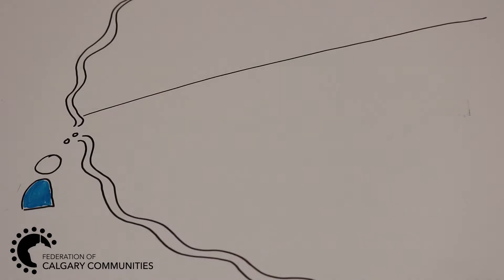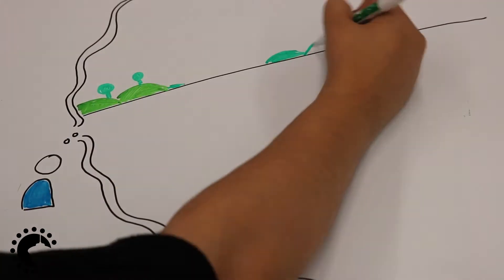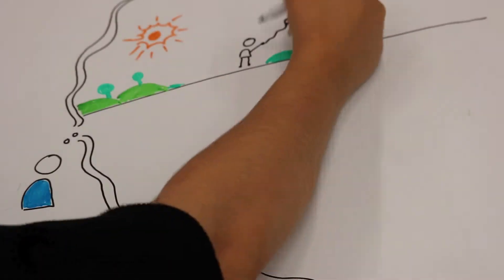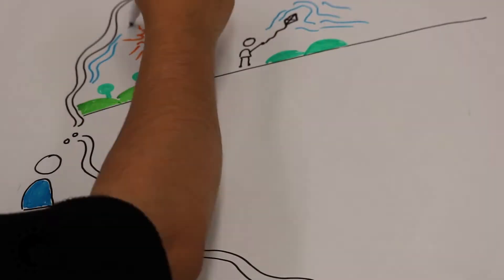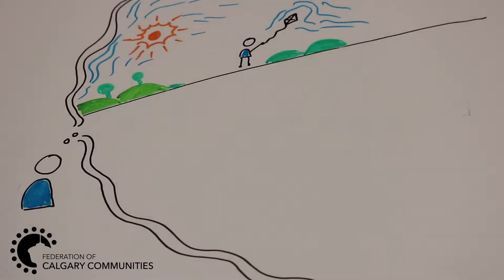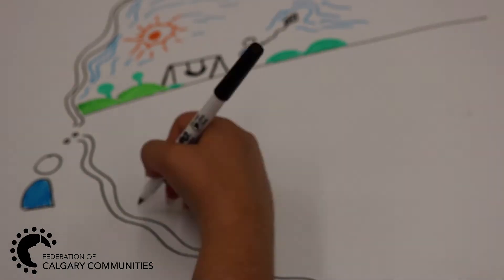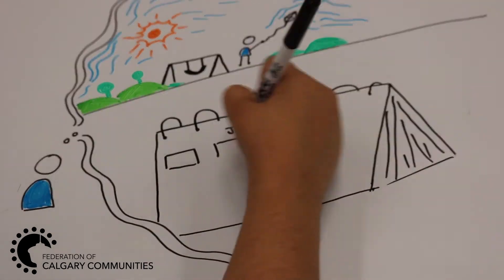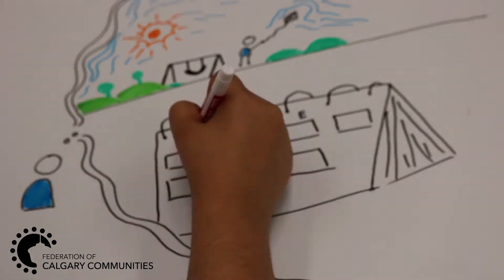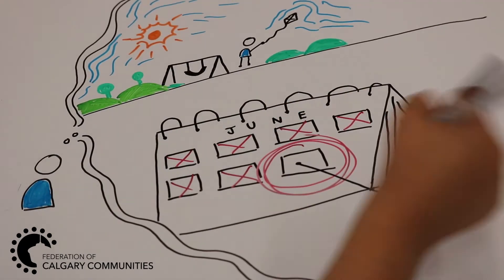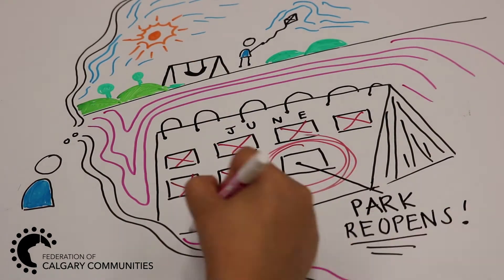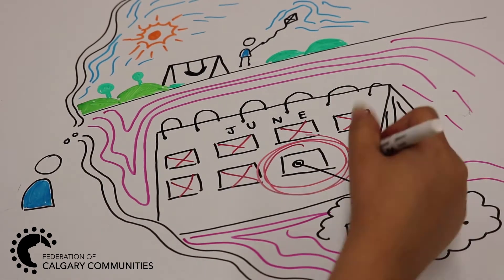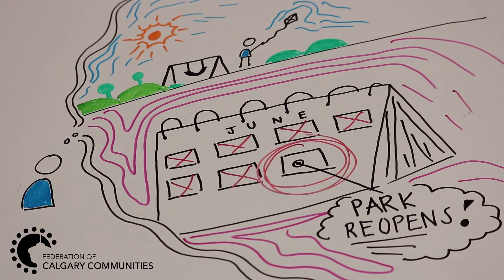The park that was once run down and underused was becoming a gathering space for the community again, all thanks to a community cleanup, financial support from a granting source, and the removal of the graffiti in the park. Pete wanted the park to be reopened by summer, which gave the action plan a timeline.